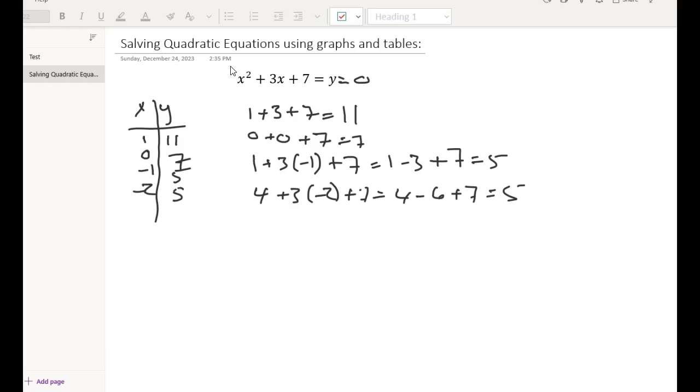Let's go minus 3. Minus 3 squared is 9 plus 3 times minus 3 plus 7. So we got 9 minus 9 plus 7 equals 7. So as we're going lower on x, your y is increasing.